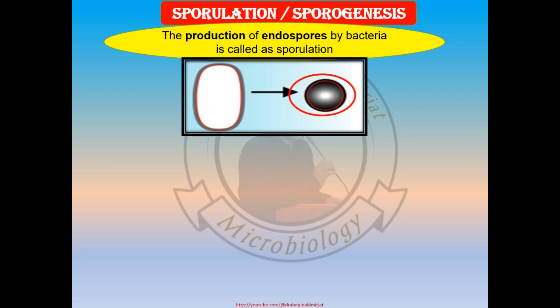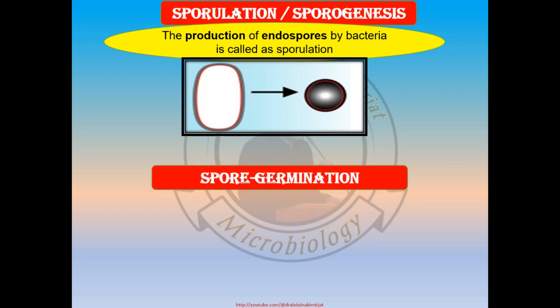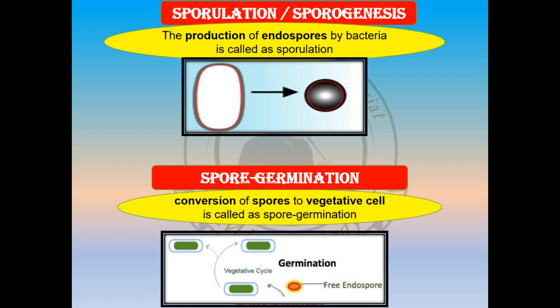If we look at this figure, suppose there is an endospore formed by a bacteria — this formation of the endospore is called sporulation. What is spore germination? Spore germination is the process of conversion of spores to vegetative cells. Here in this figure, a free endospore germinates again into a complete bacterial cell in the presence of favorable conditions. This whole process is called spore germination.